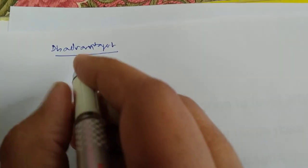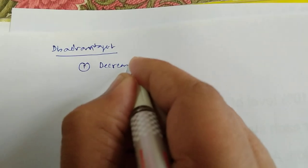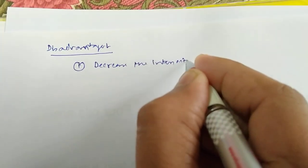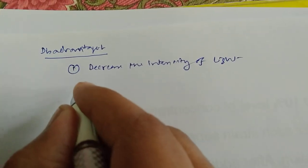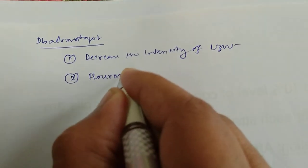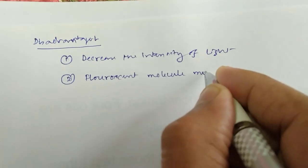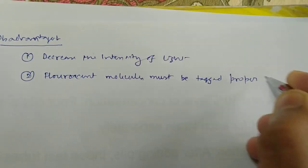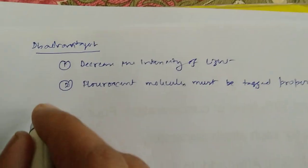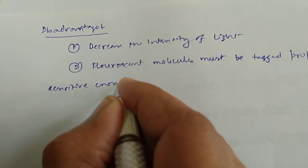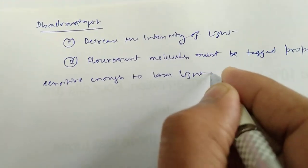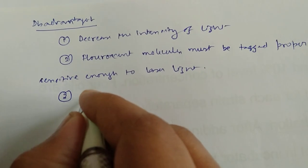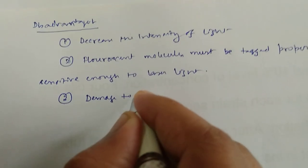Disadvantages of confocal microscopy: first, it decreases the intensity of light. Second, fluorescent molecules must be properly tagged and must be sensitive enough to laser light. Third, sometimes this causes damage to the specimen.